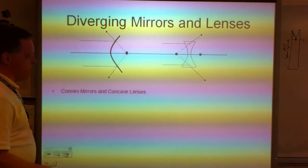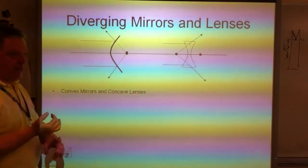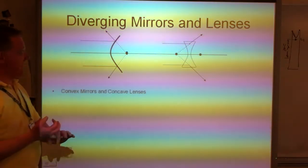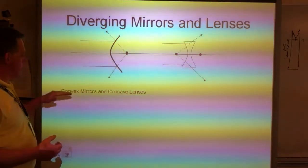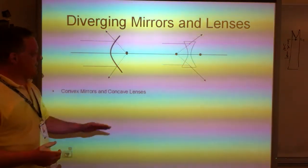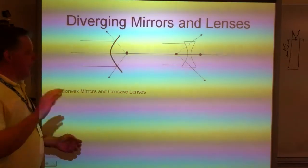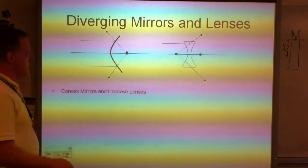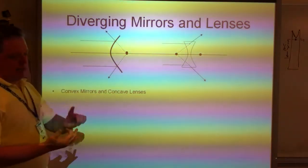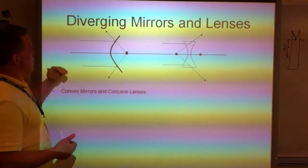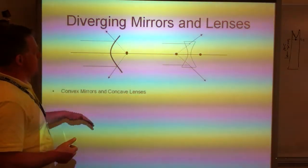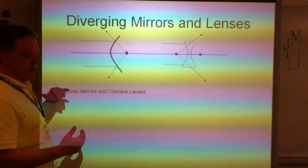You'll remember that concave mirrors and convex lenses were converging, so convex mirrors and concave lenses are diverging, and that's something that we have to memorize. What concave means, what convex means, and which types of mirrors are diverging, which types of lenses are diverging, and which are converging.